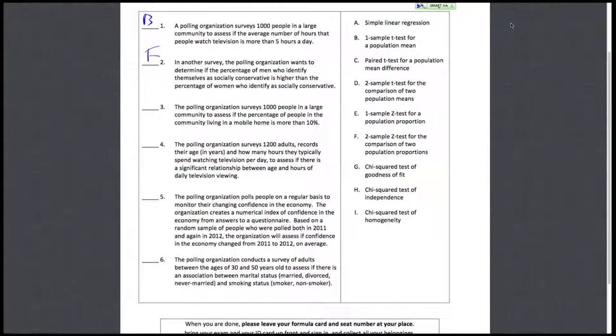Number three says the polling organization surveys a thousand people in a large community to see if the percentage of people living in mobile homes is more than ten percent. We're looking at percentage and there's only one body of people, so it's just going to be a one sample z-test for a population proportion.